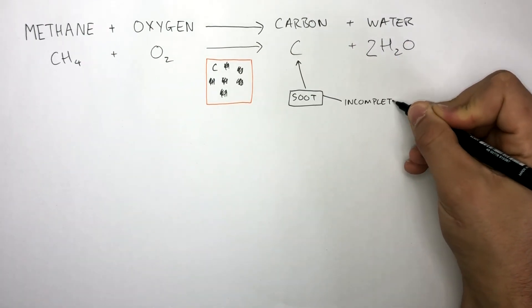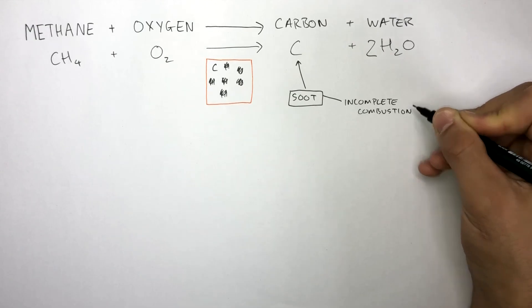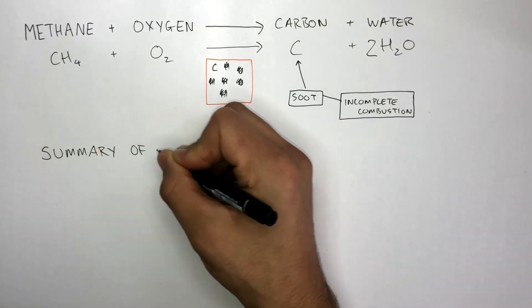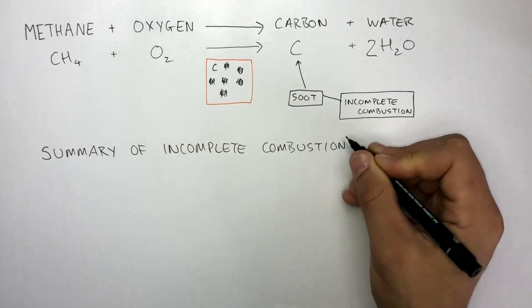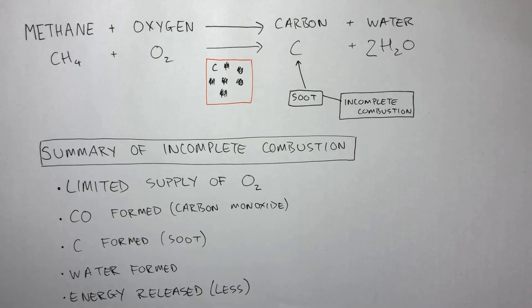Soot is only ever formed by incomplete combustion. A summary of incomplete combustion is it takes place in a limited supply of oxygen, carbon monoxide is formed, soot is formed, water is formed, and there is less energy released.